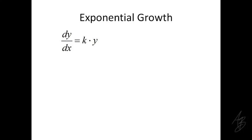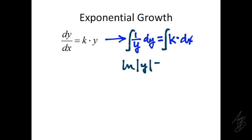We can solve a differential equation like this first by separating the variables and then integrating both sides. The integral of 1 over y is the natural log of the absolute value of y. The integral of k with respect to x is kx, and don't forget we need some constant of integration added on.